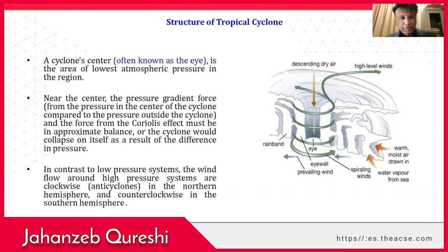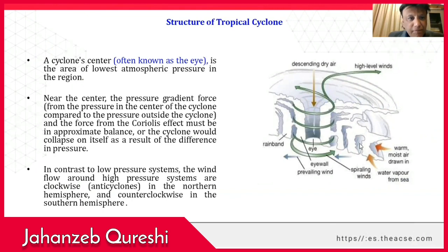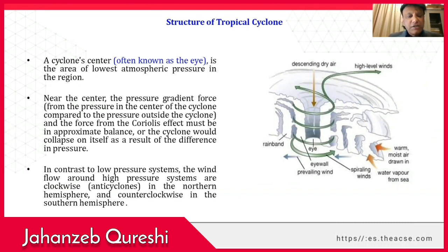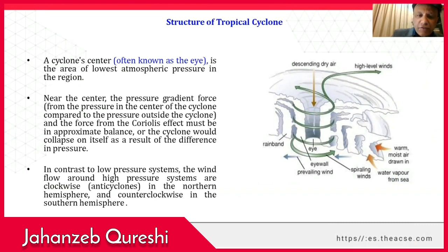Structure of the tropical cyclone. As is clear from the figure, a cyclone center, often known as the eye, is an area of lowest atmospheric pressure in the region. Near the center, the pressure gradient force and the force from the Coriolis effect must be in approximate balance, otherwise the cyclone would collapse on itself as a result of the difference in pressure.